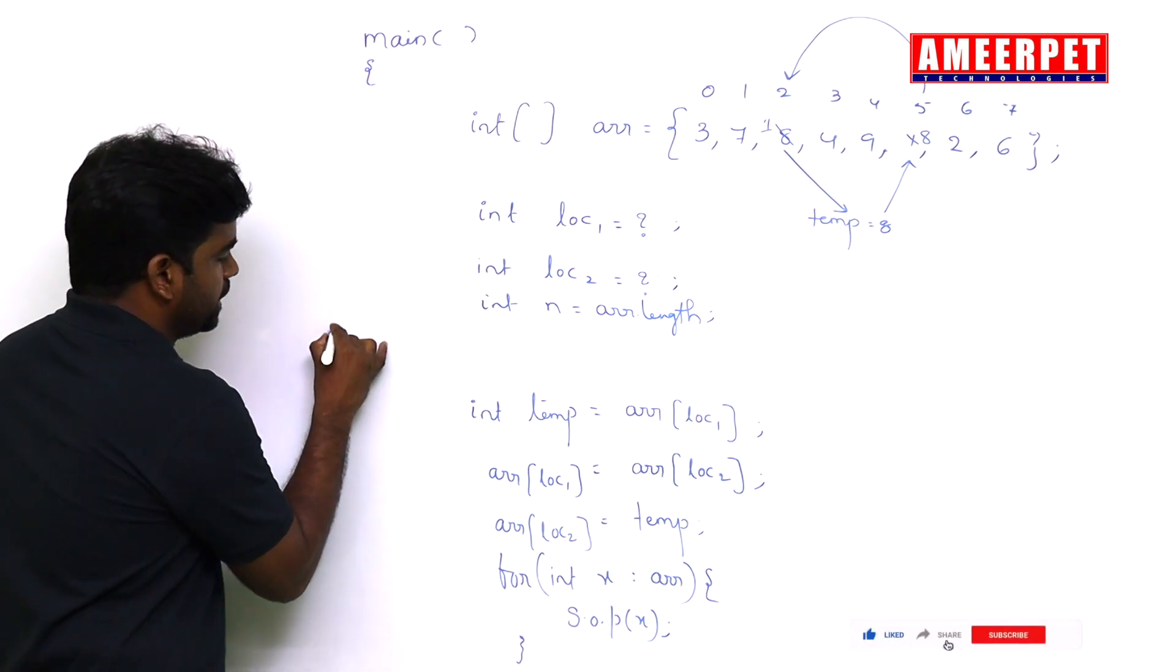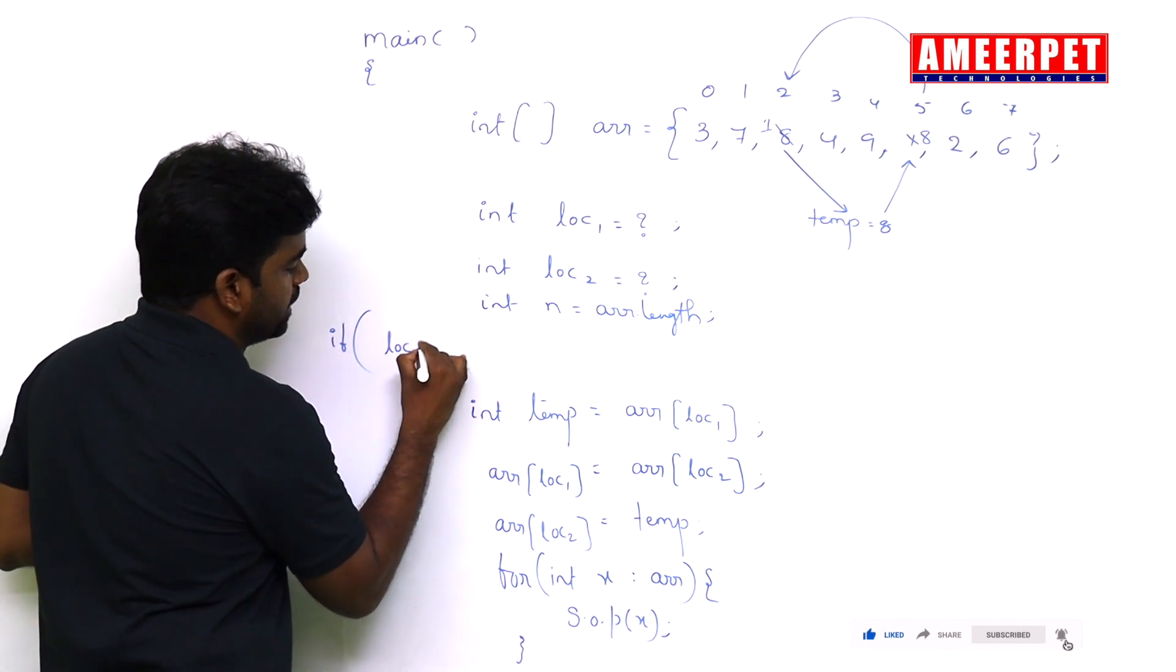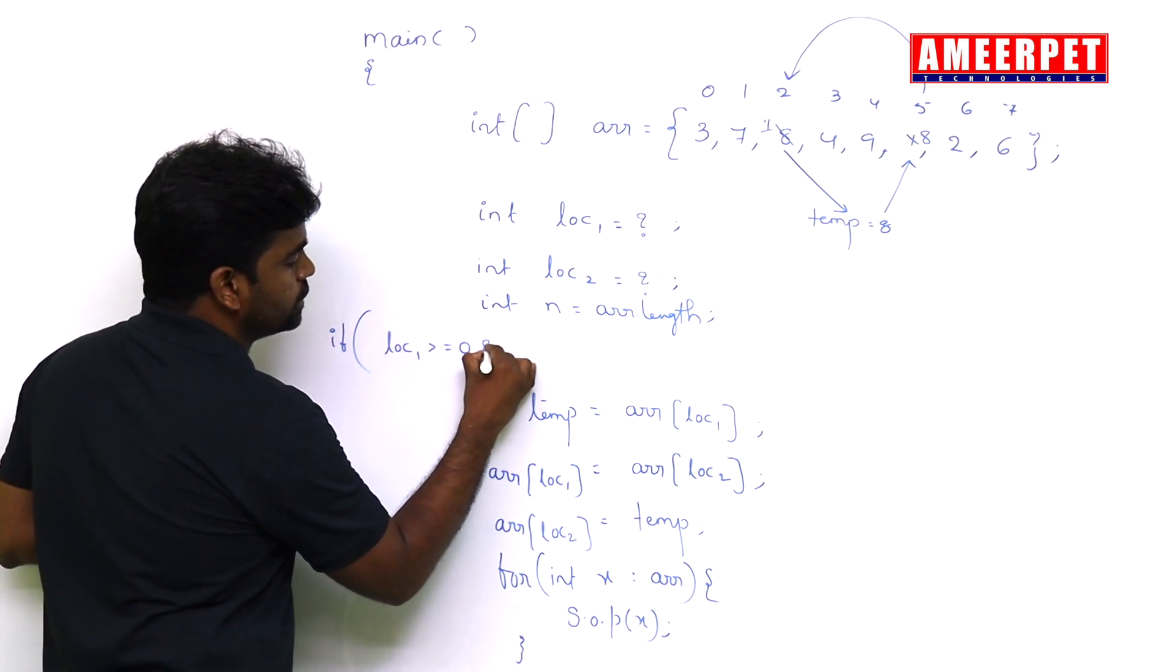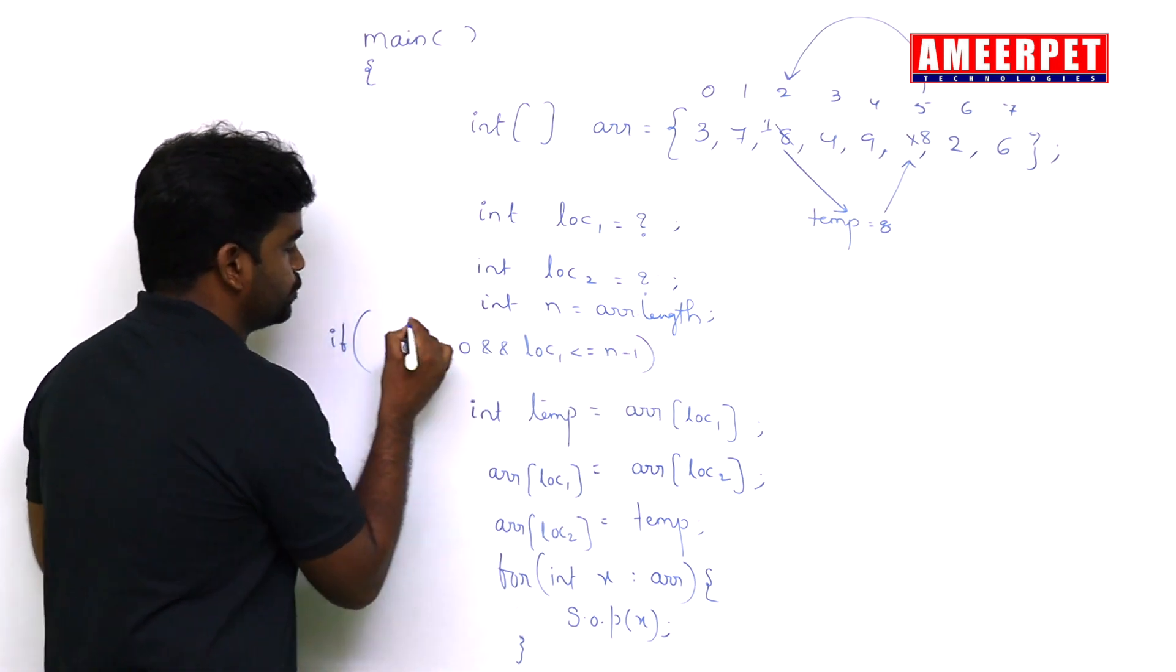So the condition is if the location 1 is greater than or equal to 0 and location 1 is less than or equal to length minus 1.